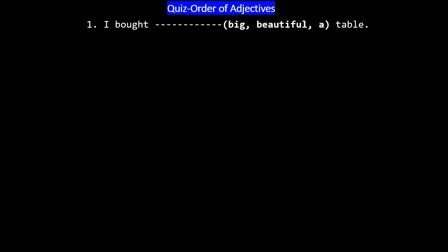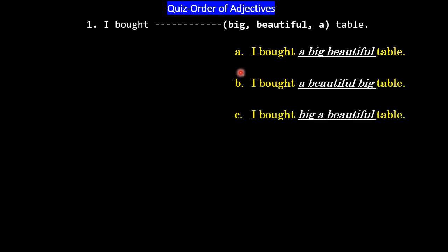I am going to ask the first question. I bought a big beautiful table, so I am going to describe the table, and I have three options: A, B, C. A big beautiful table. A beautiful big table. A big beautiful table. These words — describing words — are arranged in order.